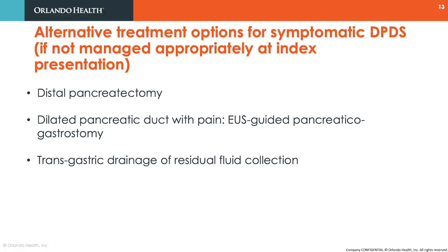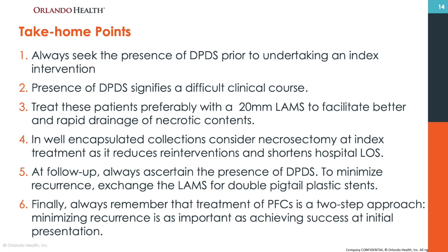However, all these salvage procedures can be avoided if patients with necrotizing pancreatitis and DPDS are managed thoughtfully at the index intervention. These are the final take-home points: 1. Always seek the presence of DPDS prior to undertaking an index intervention. 2. Presence of DPDS signifies a difficult clinical course. 3. Treat these patients preferably with a 20 mm LAMS to facilitate better and rapid drainage of necrotic contents. 4. In well-encapsulated collections, consider necrosectomy at index treatment as it reduces re-interventions and shortens hospital length of stay. 5. At follow-up, always ascertain the presence of DPDS. To minimise recurrence, exchange the LAMS for double pigtail plastic stents.